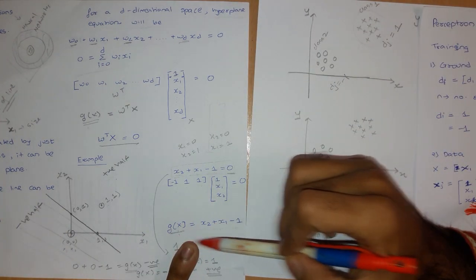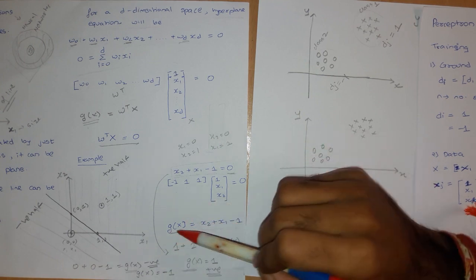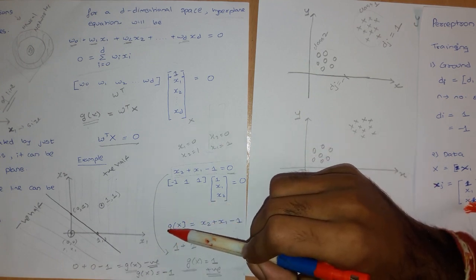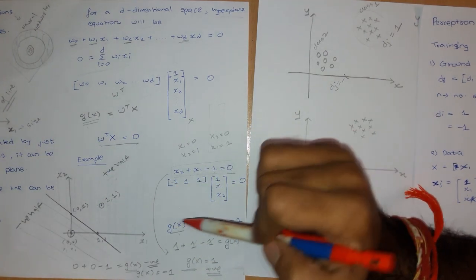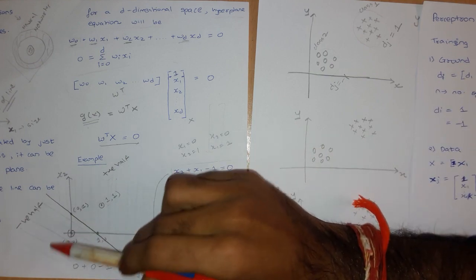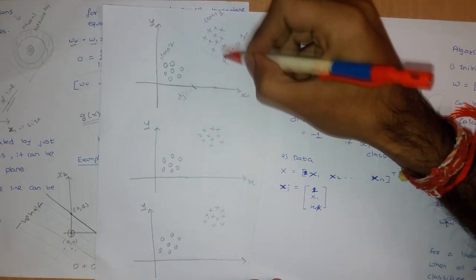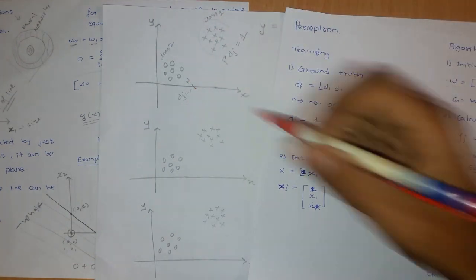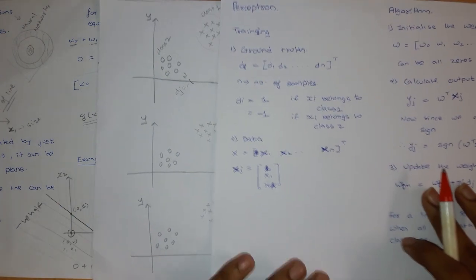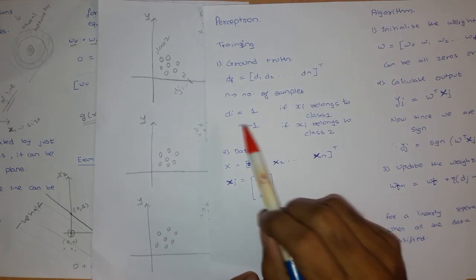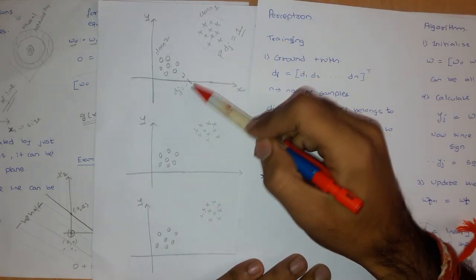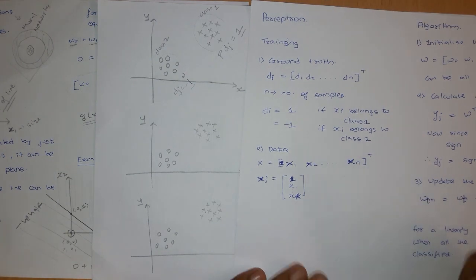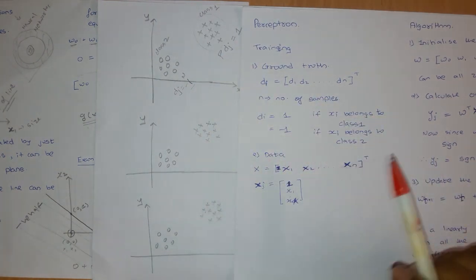We use the sign of the output g of x. If the sign is positive, the sample belongs to the positive class. If the sign is negative, the sample belongs to the negative class. So one class is the positive class and the other is the negative class. The value of di can only be one or minus one — we are considering only the binary class case for now.